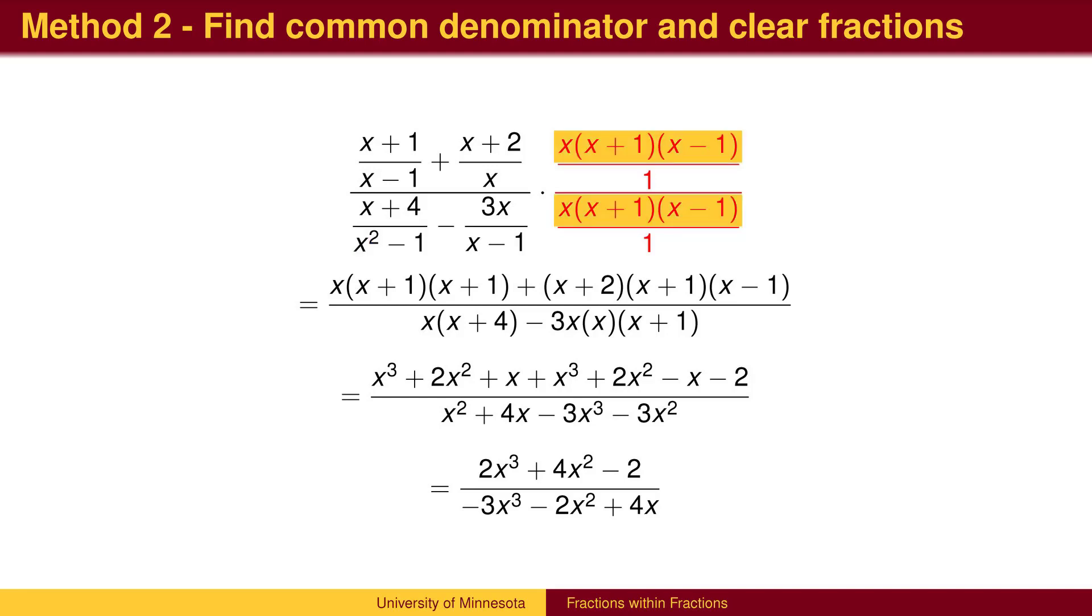If we multiply the numerator and denominator of the large fraction by these three factors, all of the denominators of the smaller fractions will be cancelled, and we will have a fraction with only two layers. The polynomial should be expanded, then like terms added.